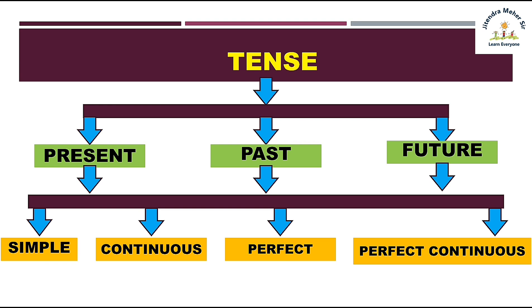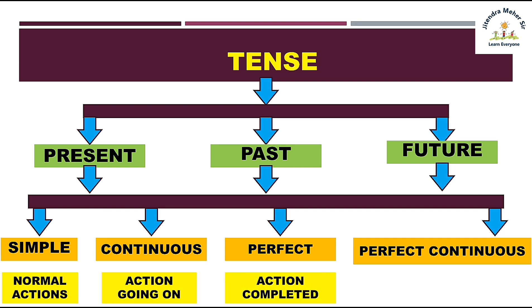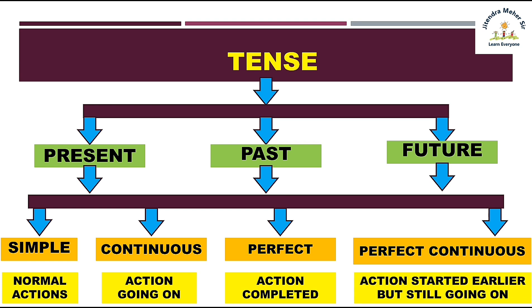So total 12 tenses bante hain. Simple is used to show normal actions. Continuous is used to show the action which is going on. Perfect ka istamal kiya jata hai when the action is completed. And perfect continuous ka istamal kiya jata hai when the action started earlier but is still going on.